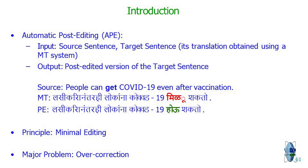An important constraint for APE systems is that they should only make necessary changes to the translation — this is called minimal editing. However, current approaches struggle with this; they often end up changing the translation much more than needed, sometimes even reducing quality. This problem is called overcorrection. The data used for APE includes the source sentence, the MT system translation, and the human post-edited version.